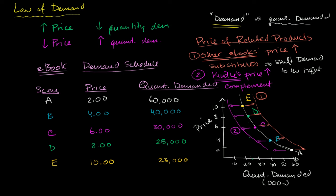You can think about all the scenarios — I encourage you to draw them yourself. Think about a product, whether it's an e-book or some other type of product, identify the substitutes and potential complements, and think about what would happen as those prices change. Always keep in mind the difference between demand — the entire curve that we can move along if we hold everything else equal and only change price — and quantity demanded, which is a particular quantity for a particular price, holding everything else equal.